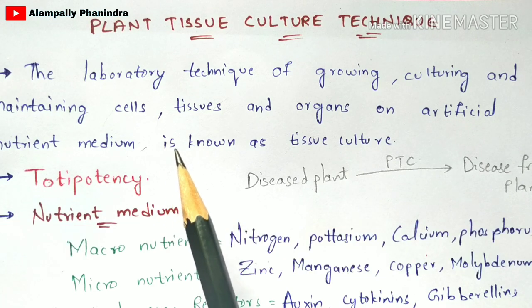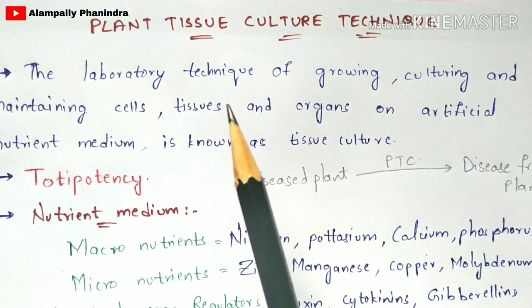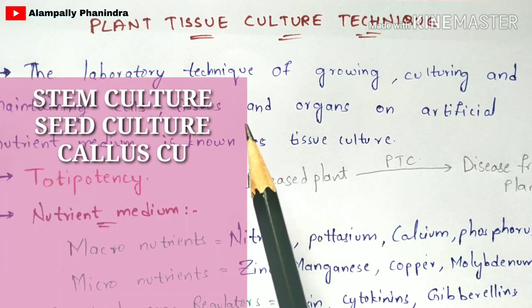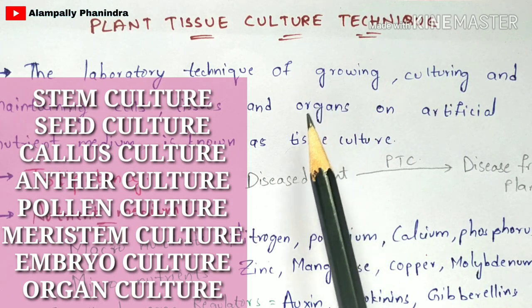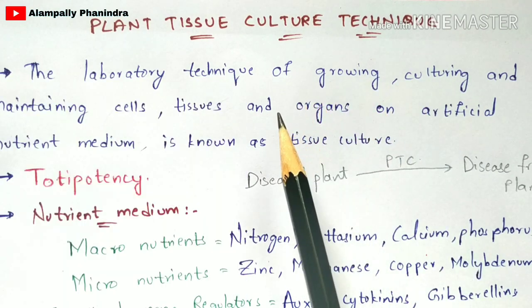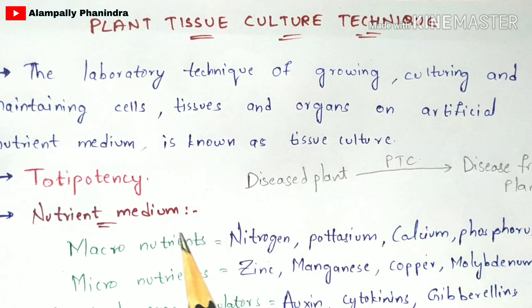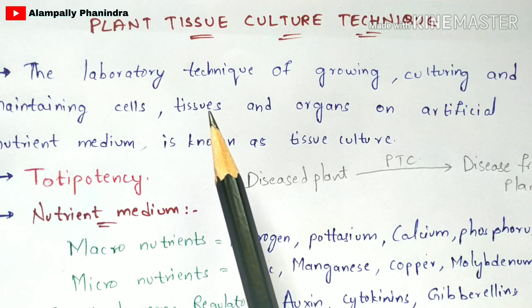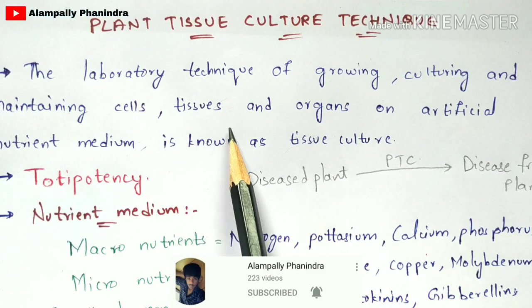There are many types of plant tissue culture techniques, and this will be a series of videos. There are different types of plant tissue cultures like stem culture, seed culture, callous culture, meristem culture, pollen culture, anther culture, organ culture, and embryo culture. To learn all of these, you first have to know the basic method involved in plant tissue culture.